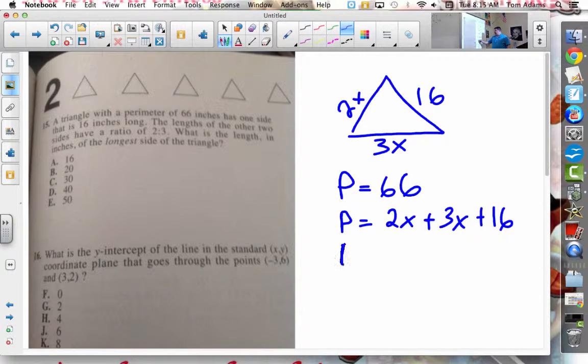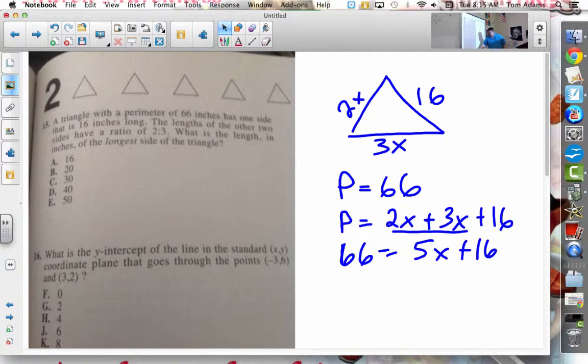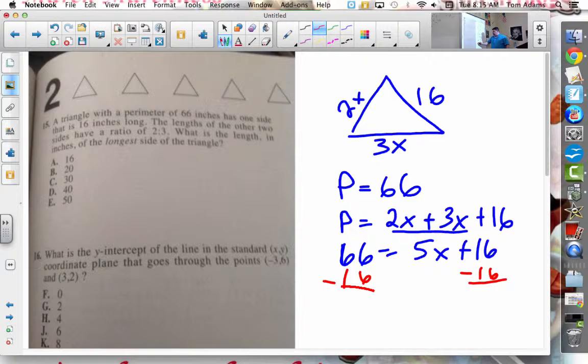So if I say this is equal to 66, and then I combine like terms, so that's 66 is equal to 5x plus 16. I'm going to subtract 16 from both sides, and I get 50 is equal to 5x.